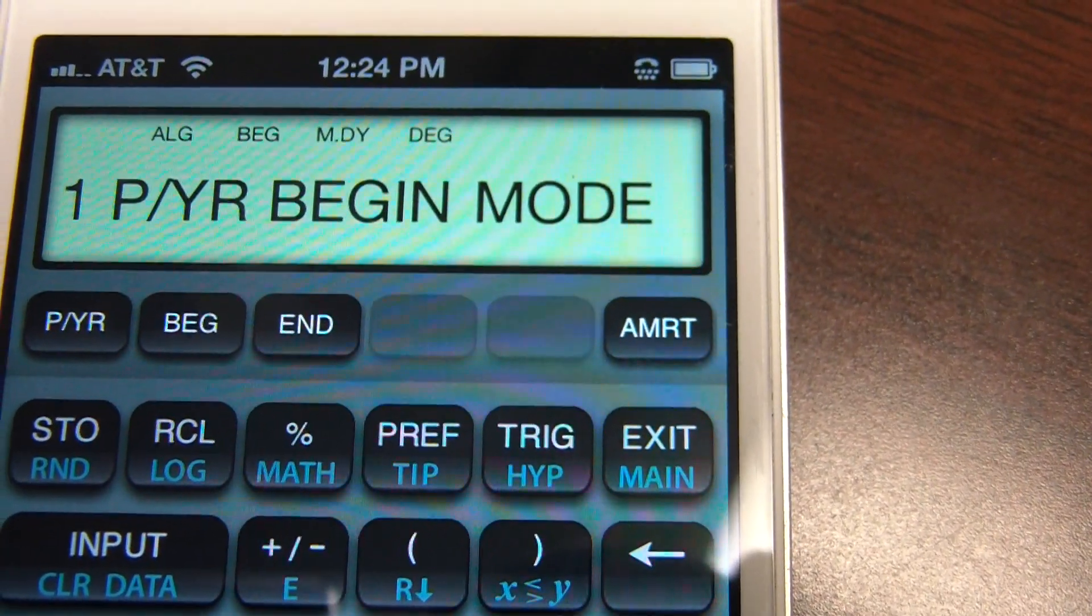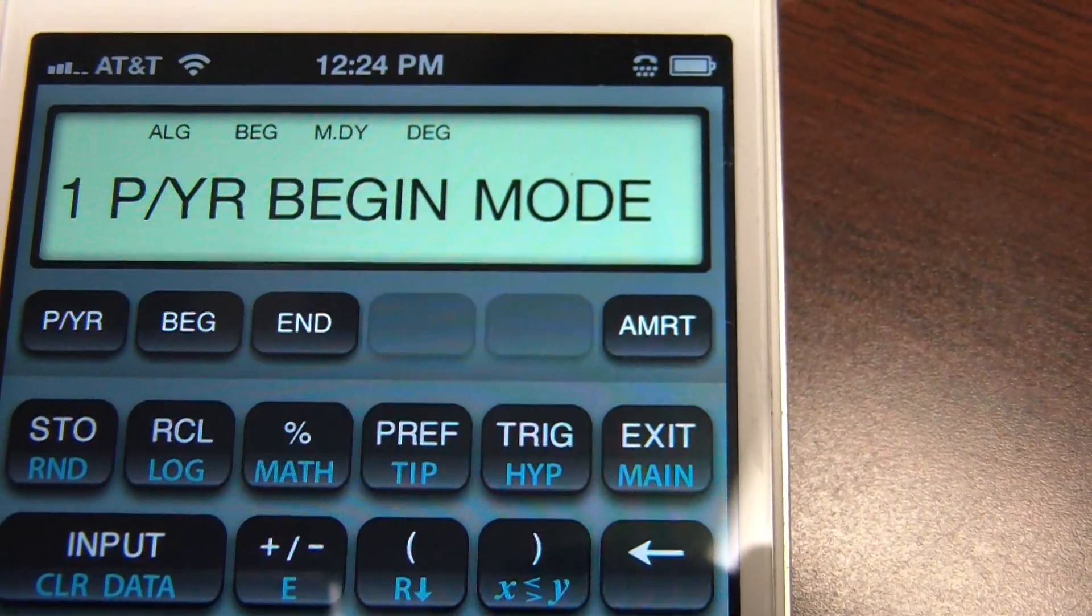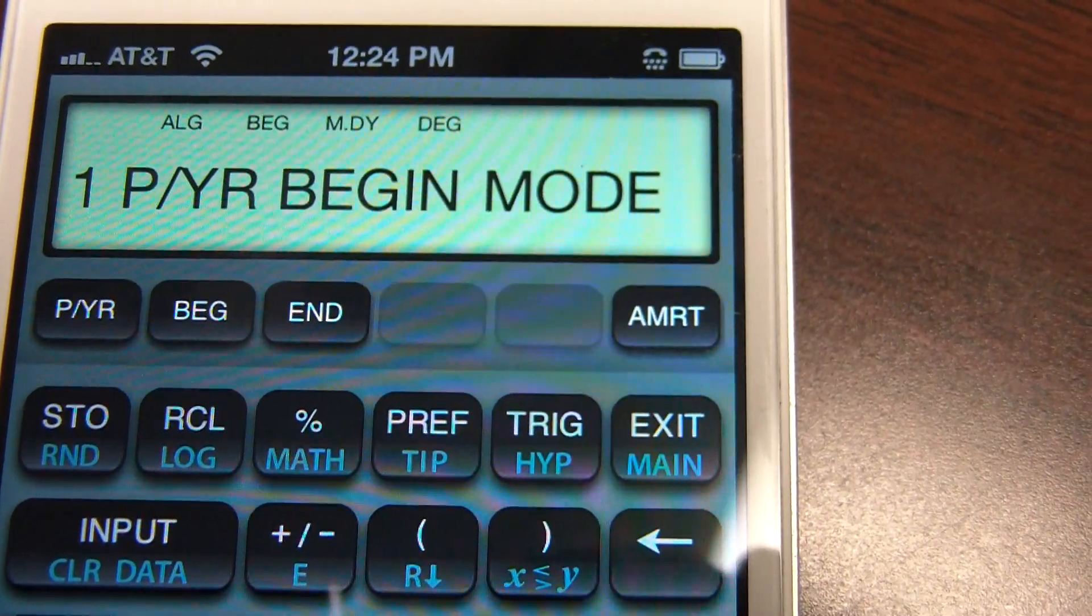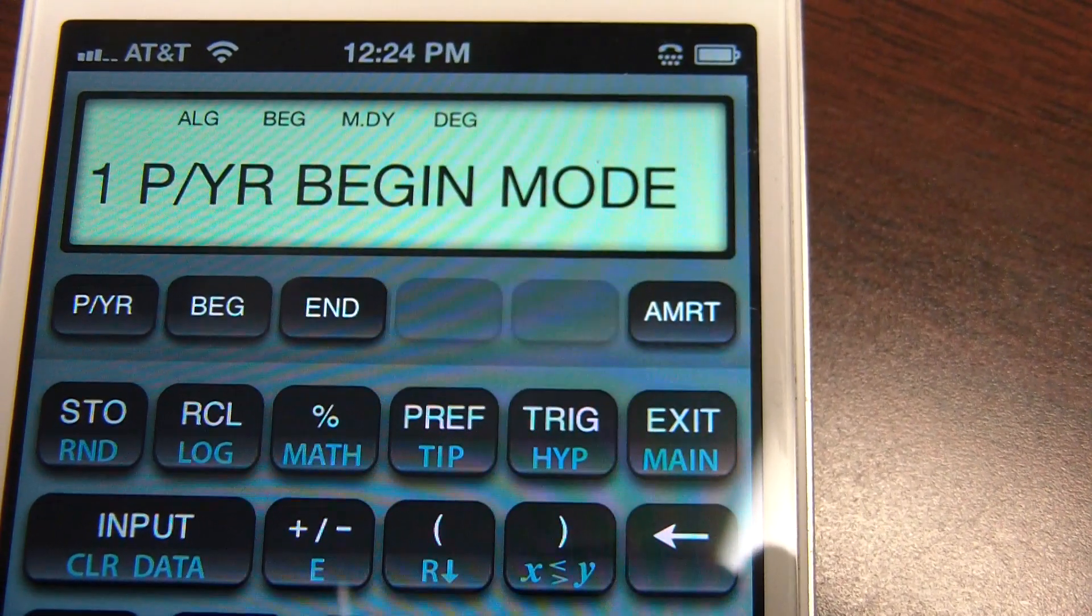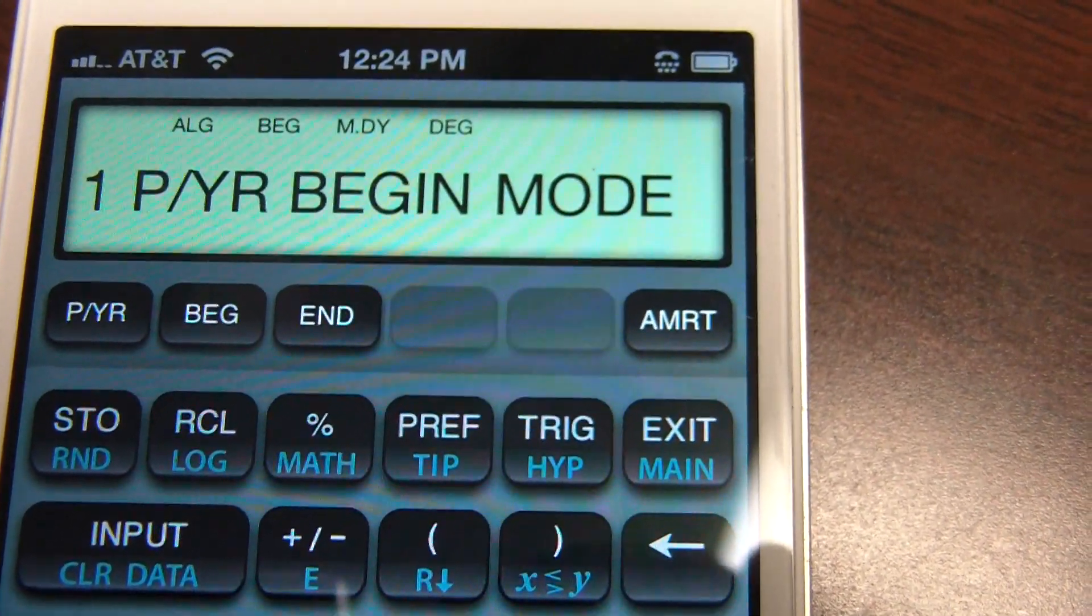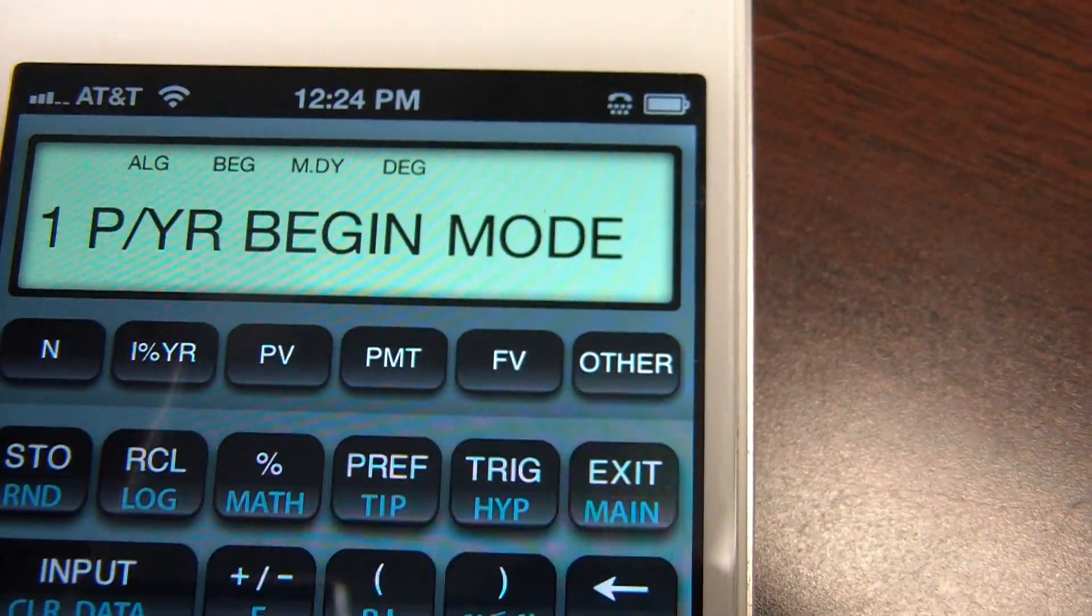Begin mode means we're at the beginning of the period making payments. End mode would be payments made at the end of the period. Begin mode is typically an annuity due problem. End mode is an ordinary annuity problem. We click exit to get out of this menu.